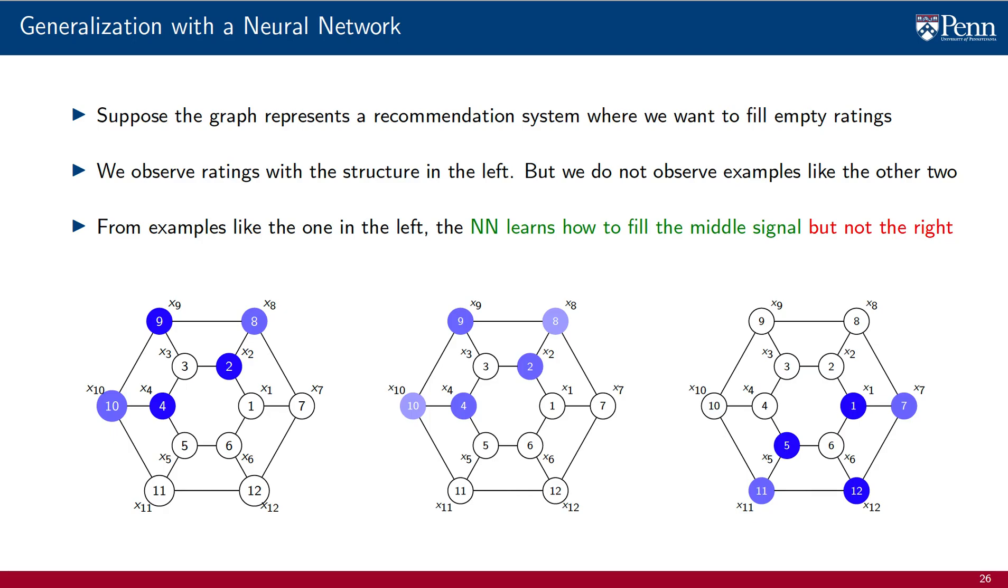This is obvious, but if you don't find it obvious, remember that the graph is unknown to the FCNN. All the FCNN knows are the signal indexes. And how is the FCNN going to learn how to fill entry x6 on the right after it has learned to fill entry x3? It's impossible.